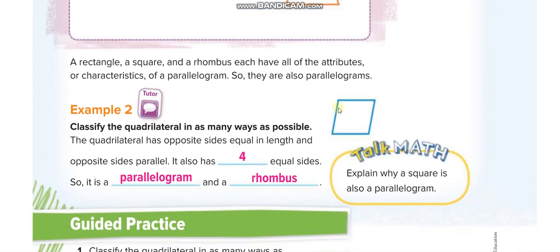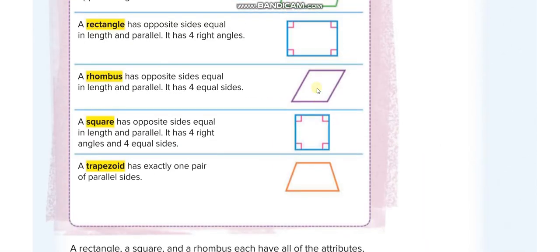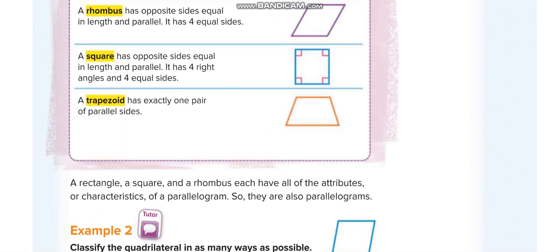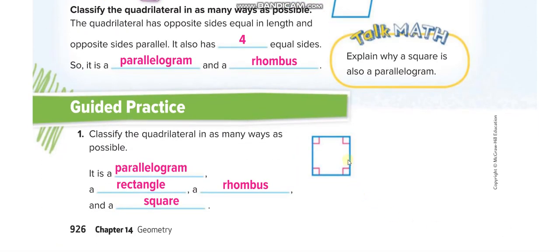Here you can see a rhombus. As mentioned, a rhombus has all the characteristics of a parallelogram, so we can also call it a parallelogram. It has four equal sides, so it is both a parallelogram and a rhombus. A square is a parallelogram, a rectangle, a rhombus, and a square. Let's move to the next page.